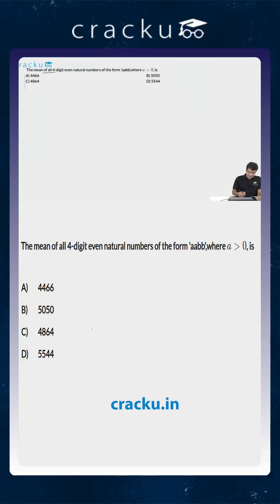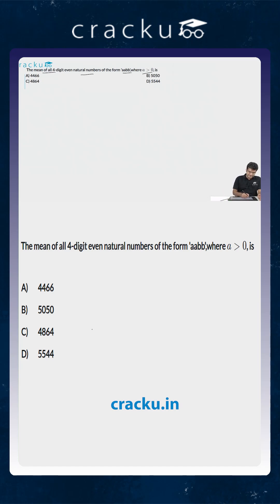In this question we are asked to find out the mean of all the 4-digit even natural numbers which are of the form a, a, b, b where a is greater than 0. So the first two digits are the same and the last two digits are the same, and we are told that all of them have to be even.